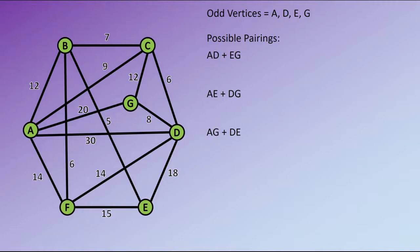Next we look to find the shortest possible route between each of those pairings. For our first pairing AD and EG, we're looking for the shortest way to get from A to D and also to get from E to G. When you're doing this, you've got to be very careful to ensure that you have found the shortest possible route.